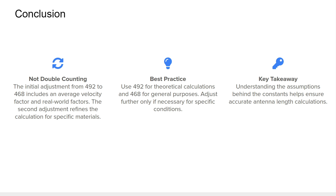To wrap things up, the key to accurate dipole antenna calculations is understanding the adjustments made to constants like 468 and when to apply them. The adjustment from 492 to 468 accounts for average conditions, including the velocity factor and real-world factors. When you adjust further using a specific velocity factor, you're refining the calculation to suit your material, ensuring that the antenna resonates at the correct frequency. The best practice, from my perspective, is to use 468, cut your antenna a little bit long, and then adjust from there.